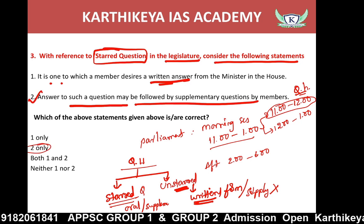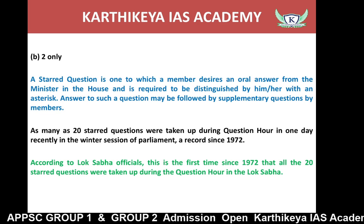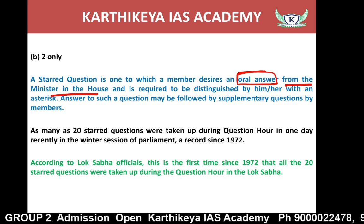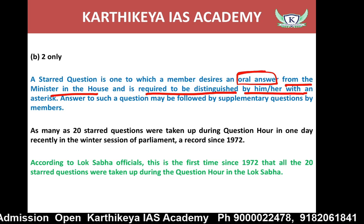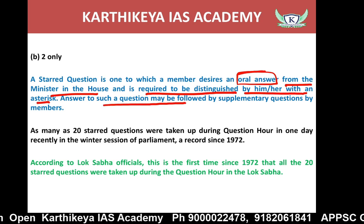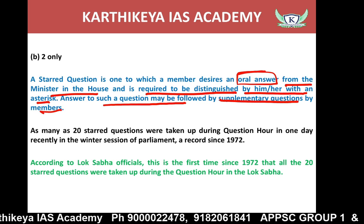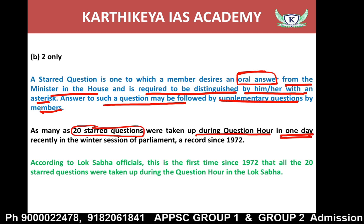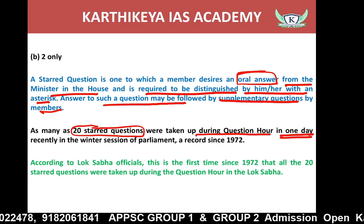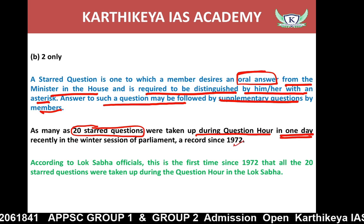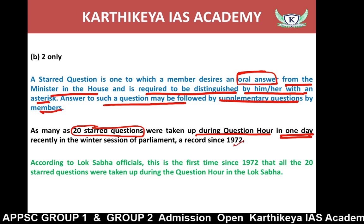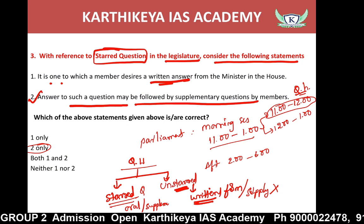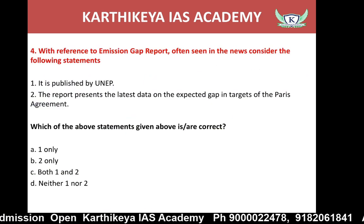A star question is one to which a member seeks an oral answer from the minister, and such a question may be followed by supplementary questions. Generally, 20 star questions are asked during the question hour in one day. The concept of question hour started in 1972, and the maximum number of questions allowed per day is 20.